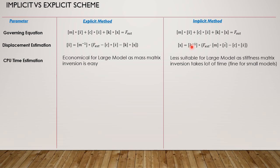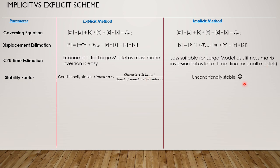For larger models consisting of millions of degrees of freedom, this estimation becomes very time-consuming. Regarding stability: the explicit scheme is conditionally stable — the time step must always be less than or equal to the characteristic length divided by the speed of sound in that material, which is basically the time taken by the wave to propagate across the edge of an element. For the implicit method, it is unconditionally stable — we can pick any large time step, but for larger models, it still takes considerable time due to the stiffness matrix inversion.